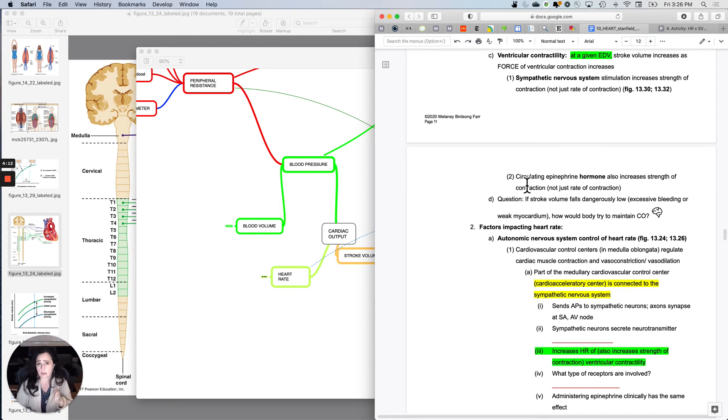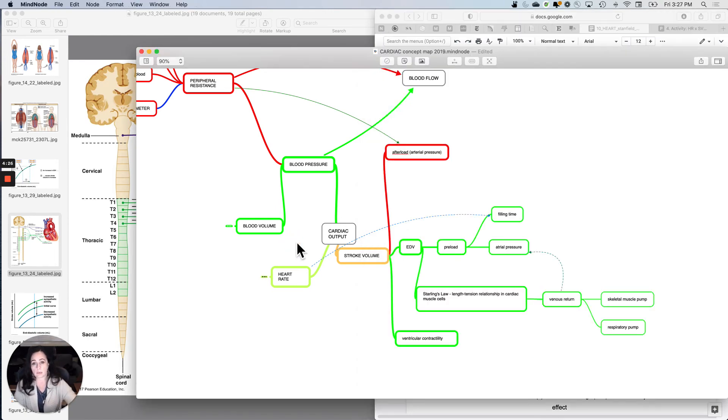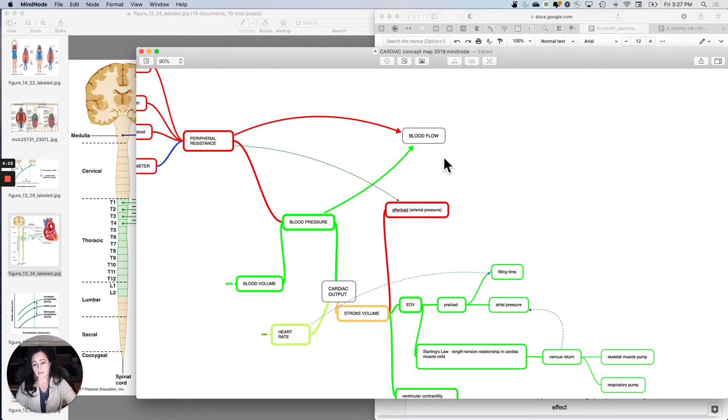If your stroke volume falls dangerously low, if your stroke volume is really low, like you have bled out or you just had a heart attack so you can't generate a lot of contractile strength, but we know that we must maintain blood flow above and beyond all things. If your stroke volume falls low, how do you maintain blood flow?